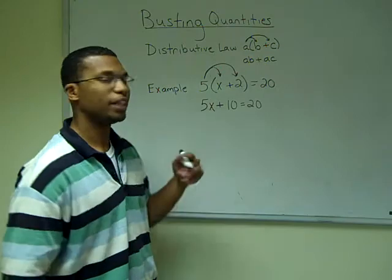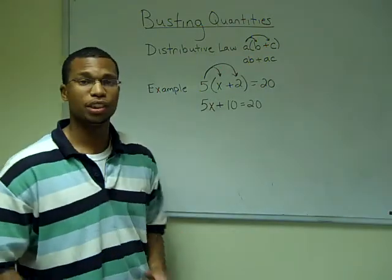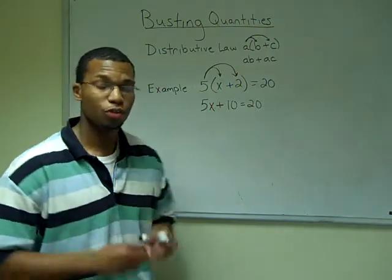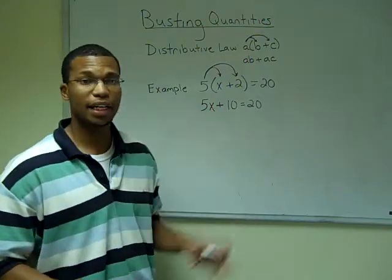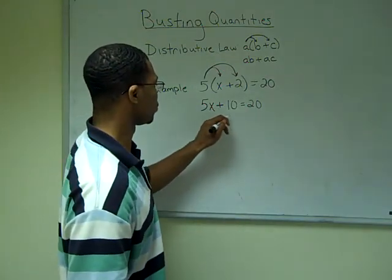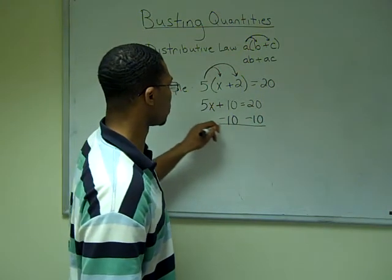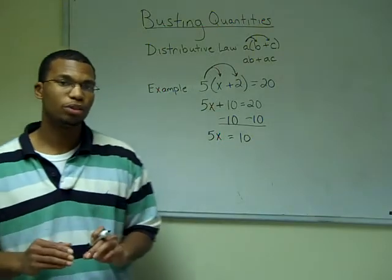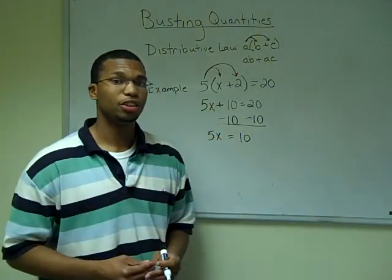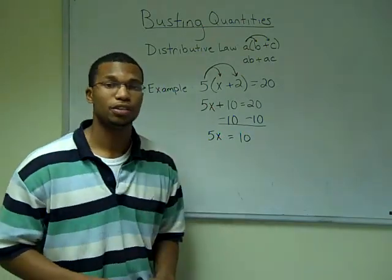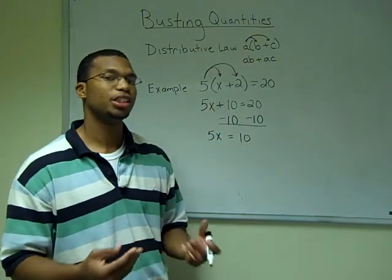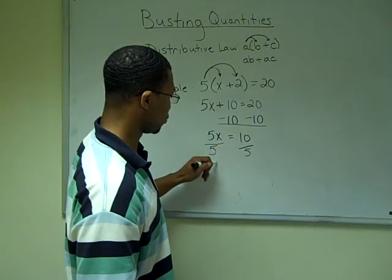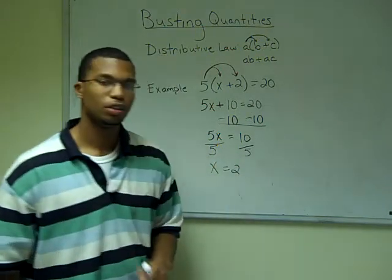Now I want to get rid of everything happening to x. I have a term of 10 being added to x, and a factor of 5 being multiplied to x. To remove the term, I use the addition principle — since 10 is being added, I subtract 10 from both sides. I'm left with 5x = 10. Now using the multiplication principle to remove the factor: since 5 is being multiplied to x, I divide both sides by 5. So x = 2.